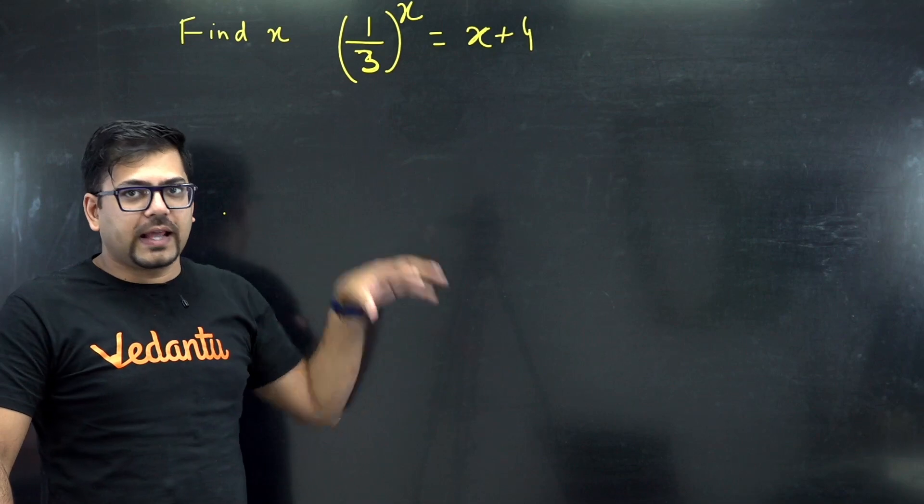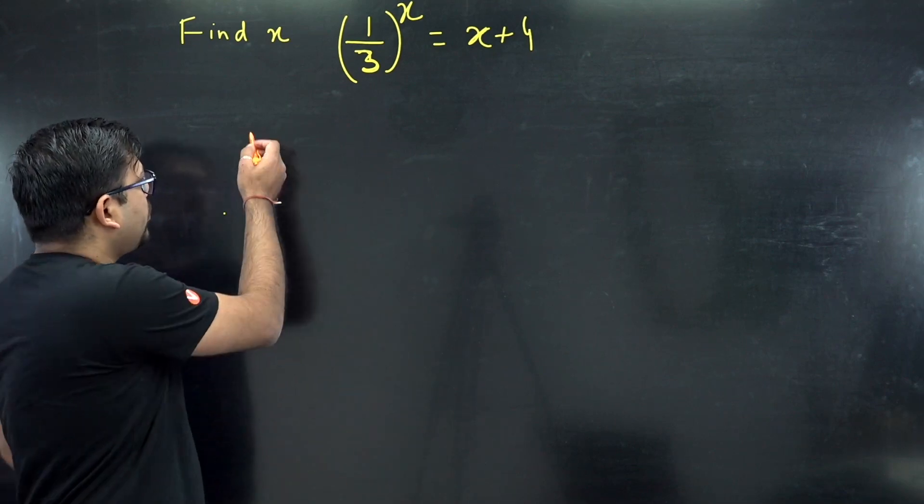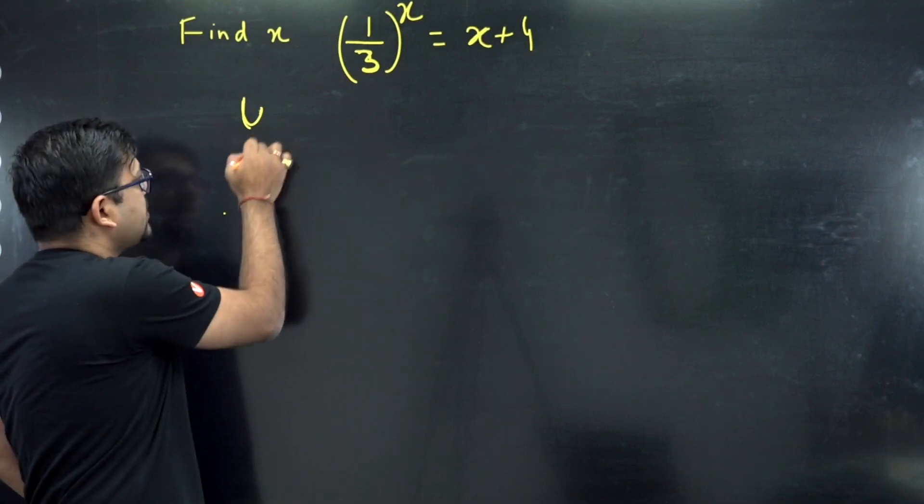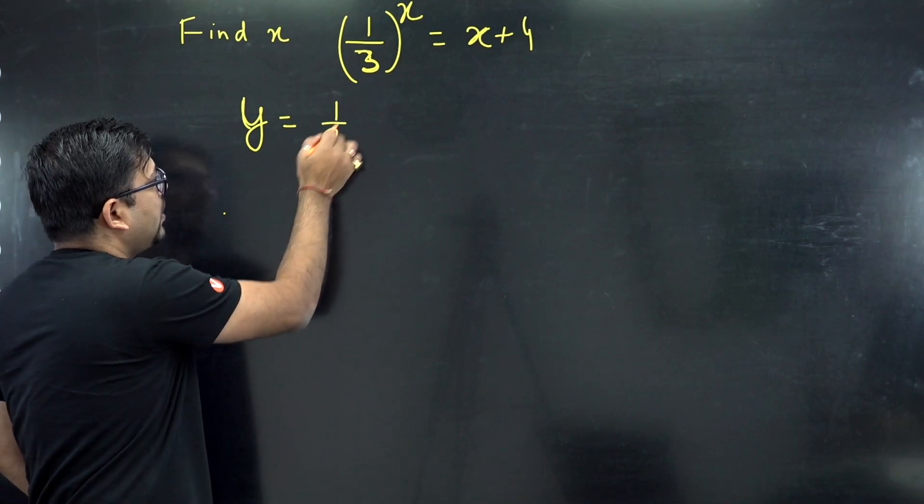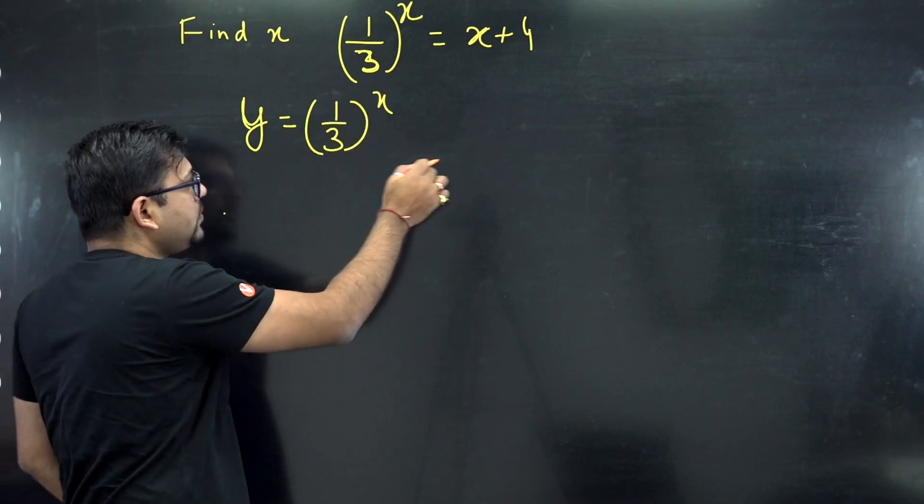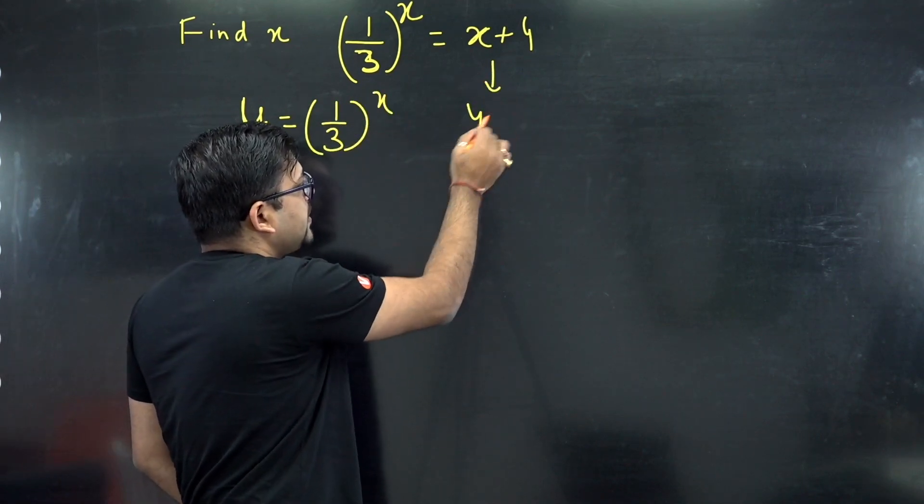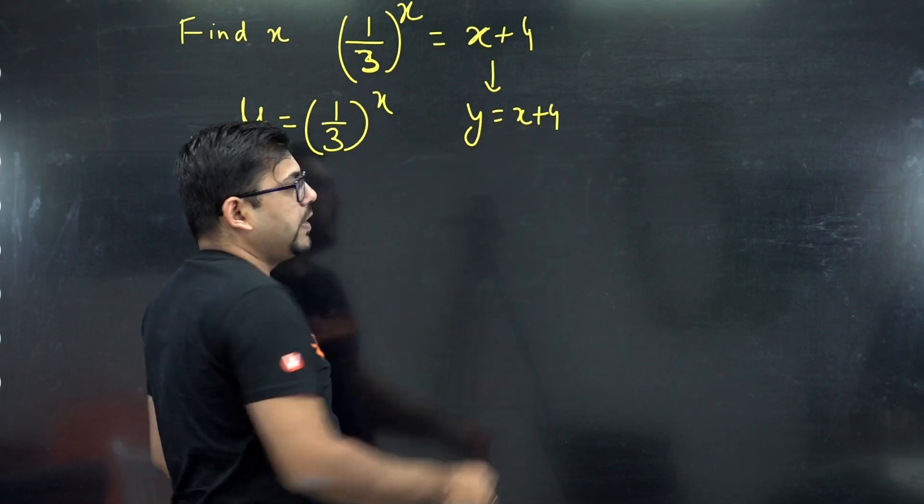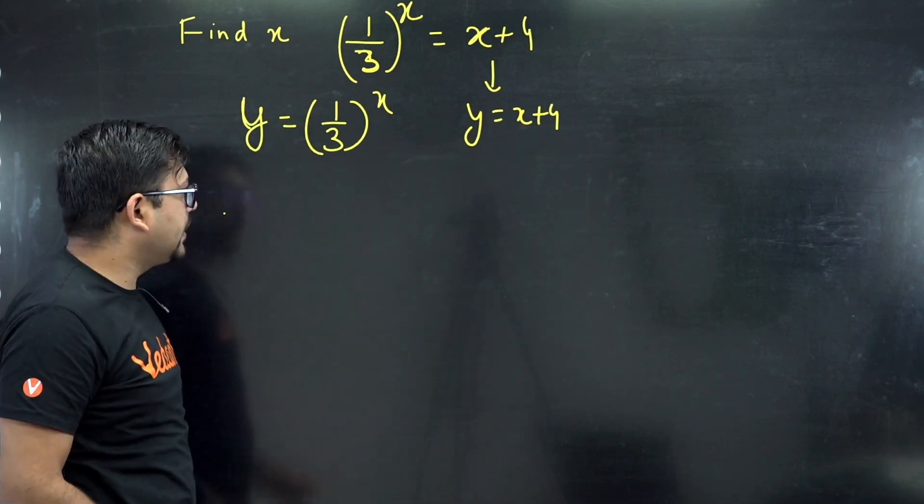So what we'll have to do is we'll have to go by graphical method. So first of all we have got a situation y equals to 1 upon 3 raised to power x, and we have got a graph y equals to x plus 4. So we will draw the graph for both the equations.